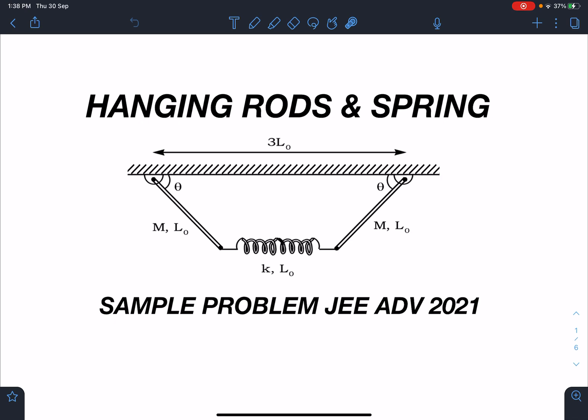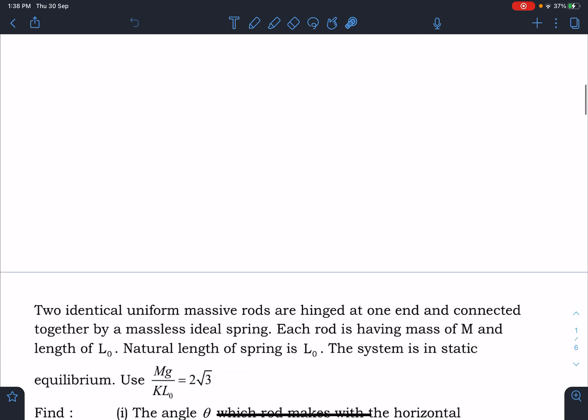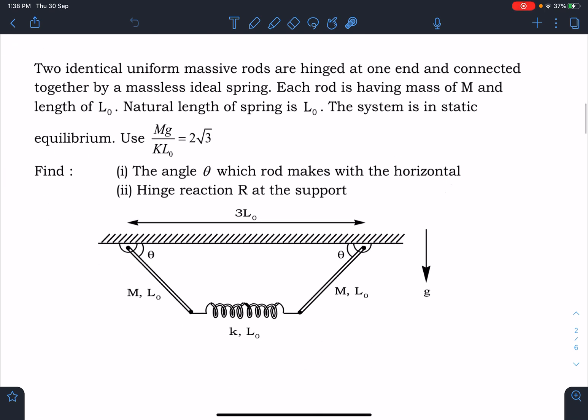Here is a problem statement: Two identical uniform massive rods are hinged at one end and connected together by a massless ideal spring. Each rod is having a mass of M and length of L₀. Natural length of the spring is L₀. The system is in static equilibrium. Use mg/(kL₀) = 2√3. Find (i) the angle θ which rod makes with the horizontal and (ii) hinge reaction R at the support. So 3L₀, L₀, L₀, mass M, spring is given and the spring remains horizontal, this is the thing we have to assume here.